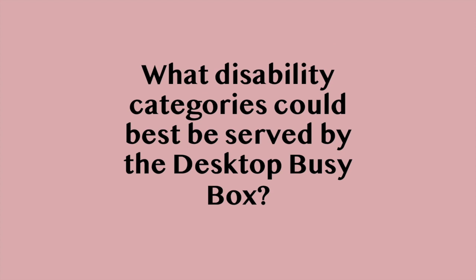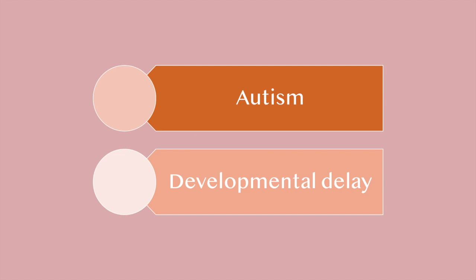What disability categories could best be served by the Desktop Busy Box? The disability categories would be autism and developmental delay. A student with autism could use this as a nice sensory toy. And those with developmental delay could use it as a learning toy to learn colors or to learn a cause and effect relationship.